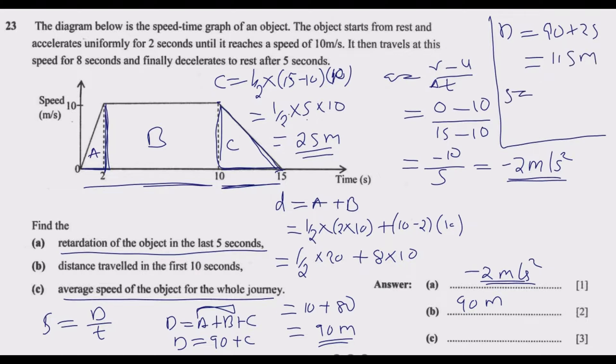Average speed for C equals 115 meters divided by the total time, which is 15 seconds.